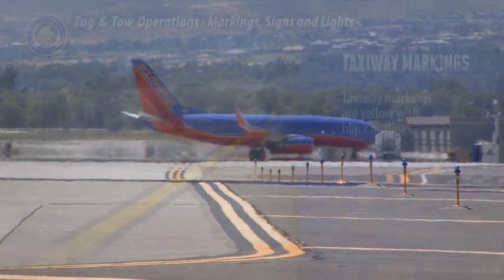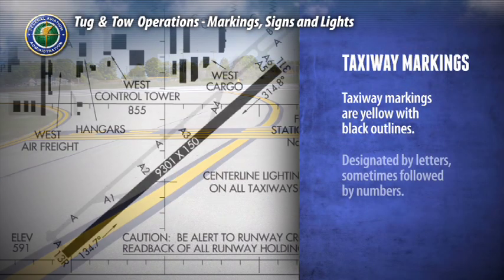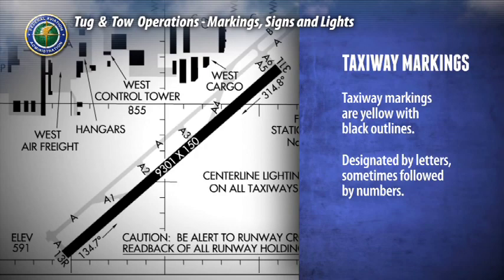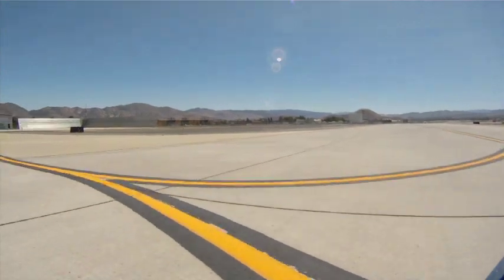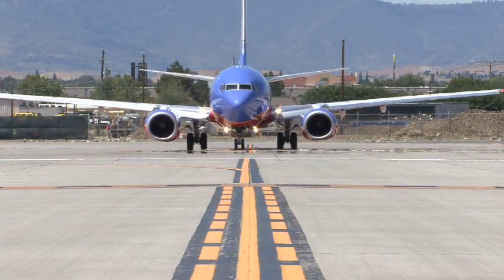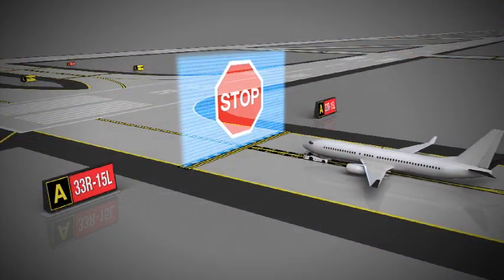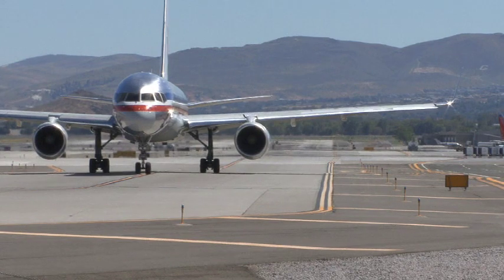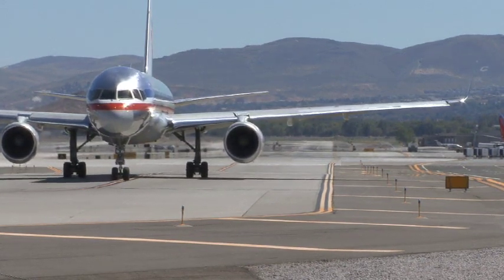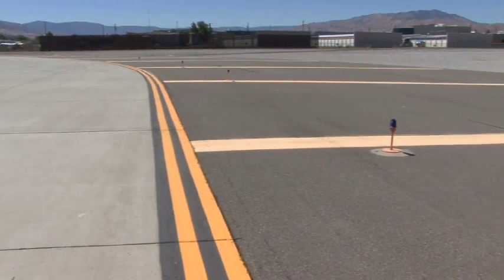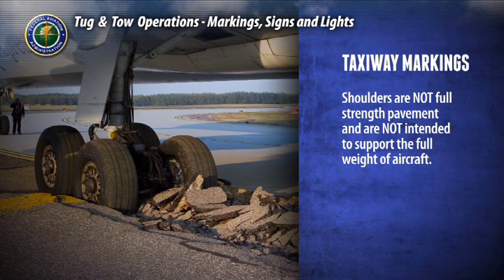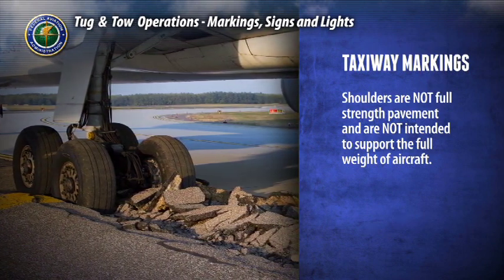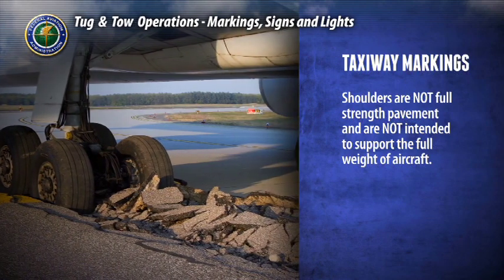All taxiway markings will be yellow and may be outlined in black to increase visibility. Taxiways are designated by letters followed by numbers in some instances. The center line, or the line of alignment you use to keep the aircraft in the center of the taxiway, has a solid yellow stripe. The nose gear should travel along the center of this line. An enhanced taxiway center line warns you of an upcoming hold position. Air traffic control clearance is required to cross the hold position. Taxiway edge markings have a single or double yellow stripe, and aircraft should not cross outside these markings. Taxiways can also have shoulder markings — these paved areas are used to prevent jet blast and water erosion from damaging the pavement. Shoulders are not full-strength pavement and are not intended to support the full weight of an aircraft, so it is critical that you do not let the aircraft cross the edge markings into the shoulder area.